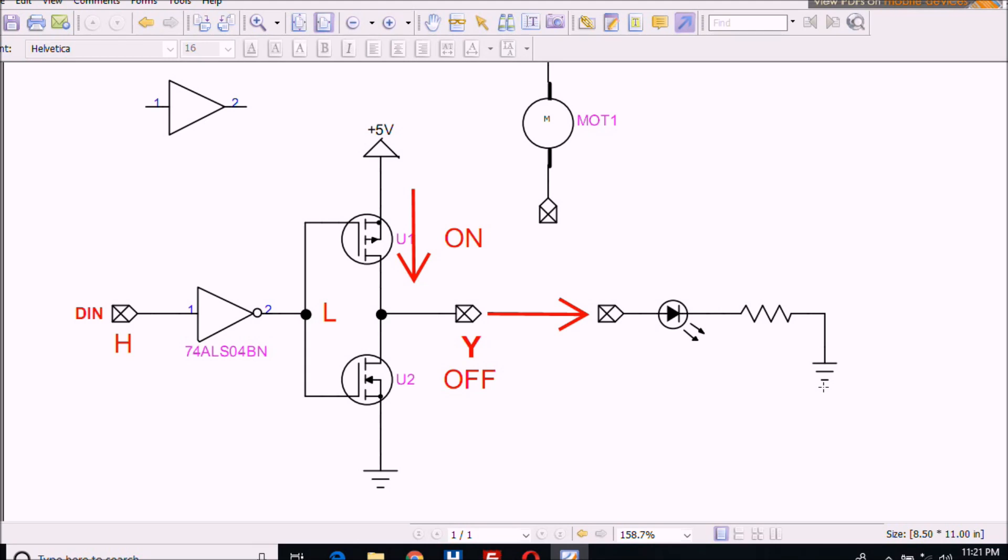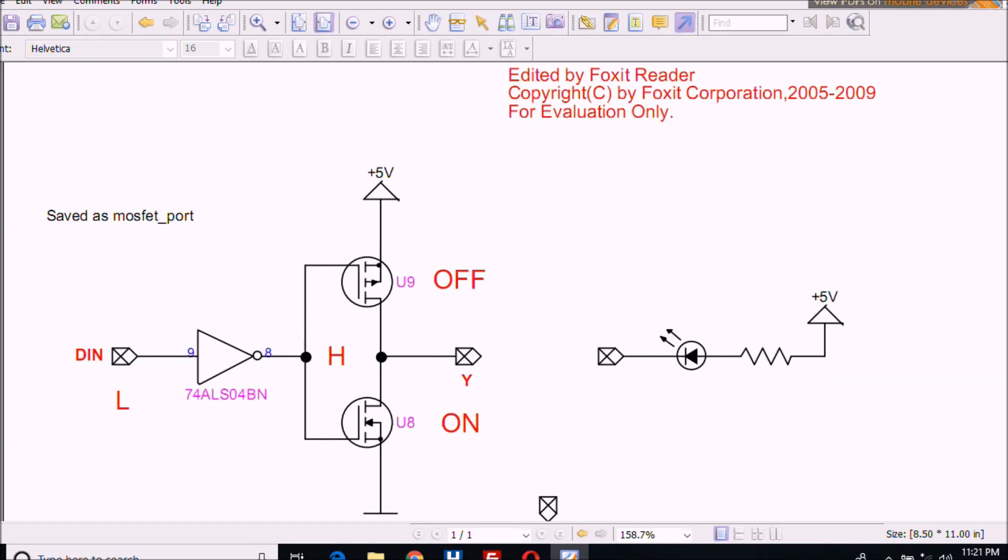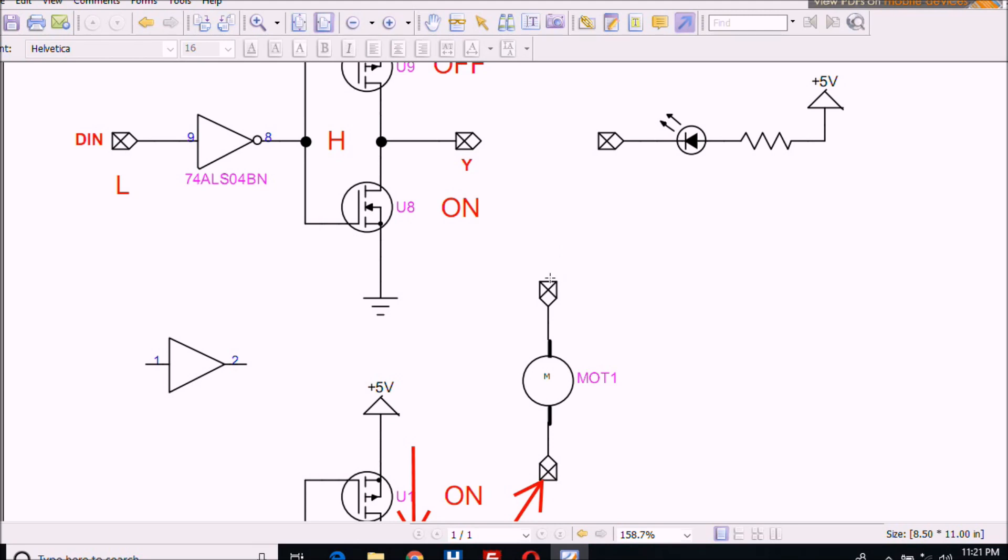It's that simple: high in, high out; low in, low out. What else can we use this for? Let's have a little bit of fun here. I'm going to connect this output to this side of the motor, and take this side of the motor and connect it to this input.